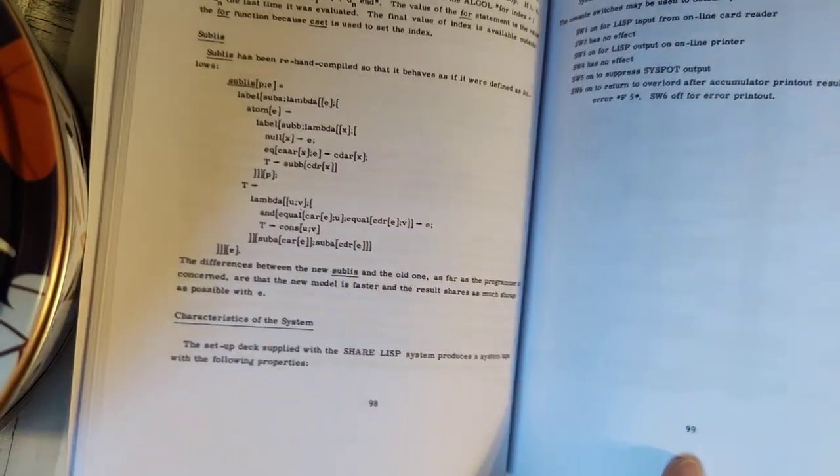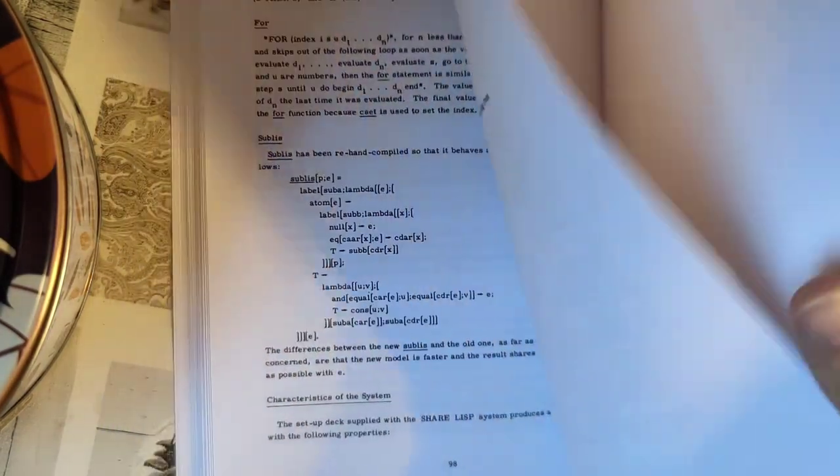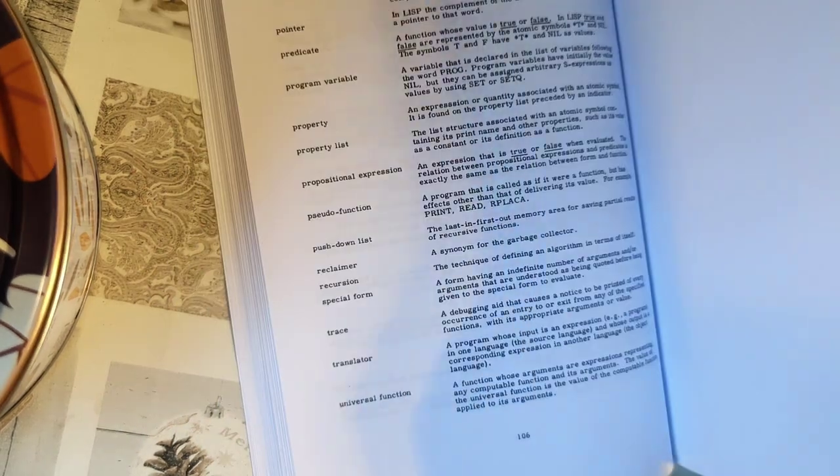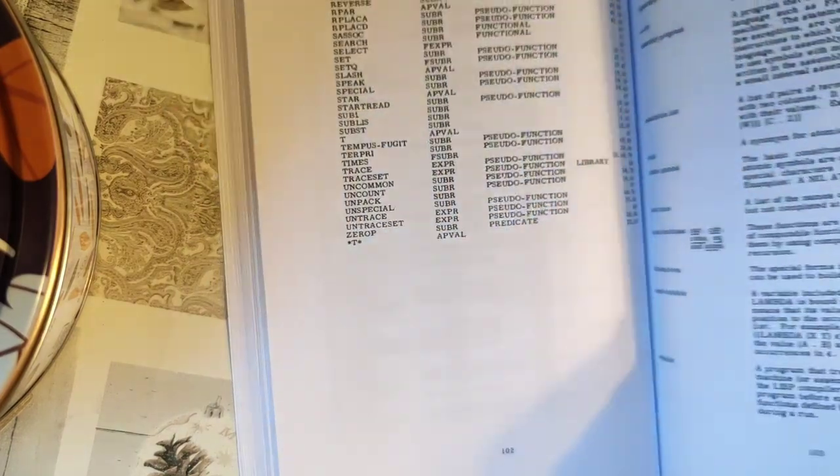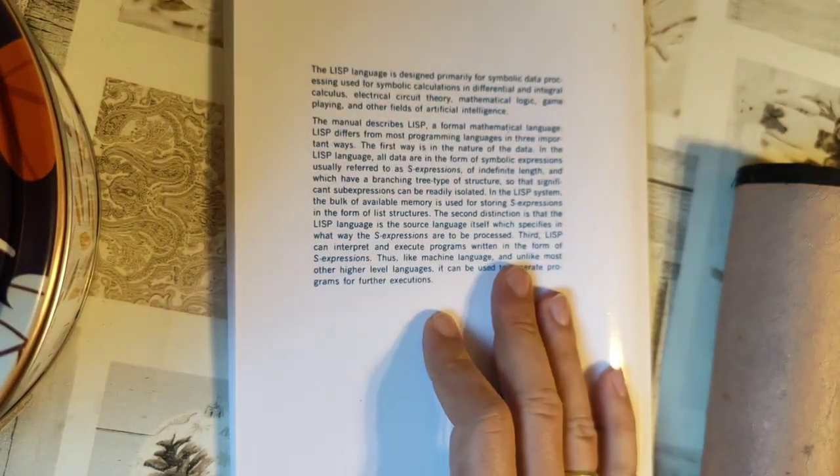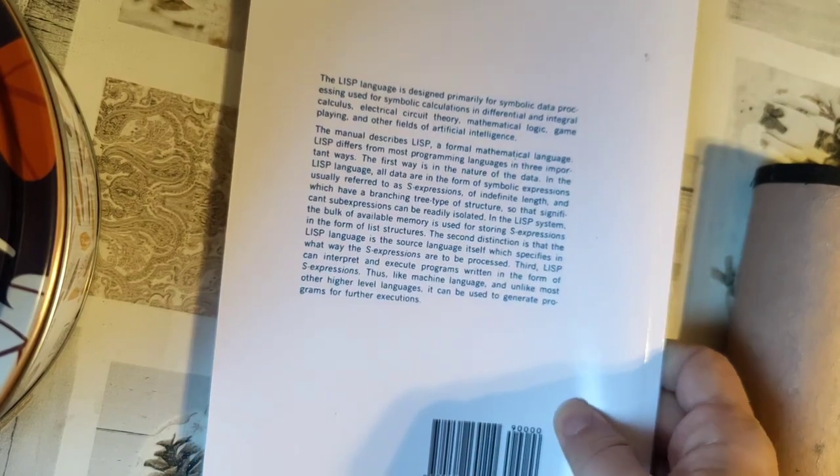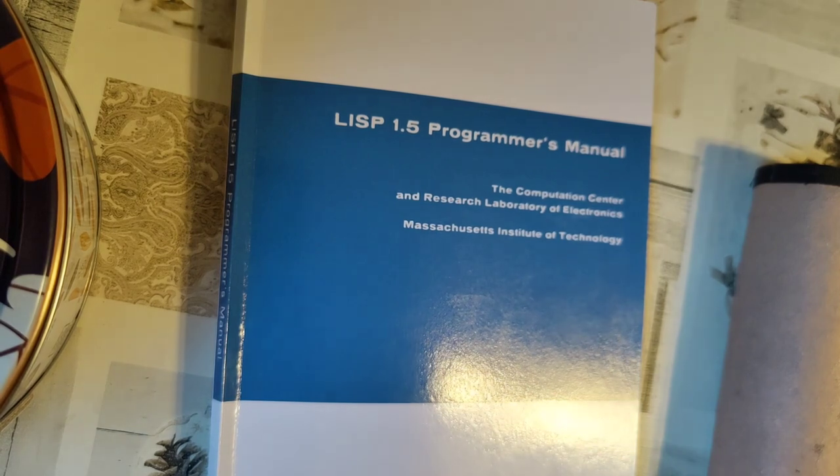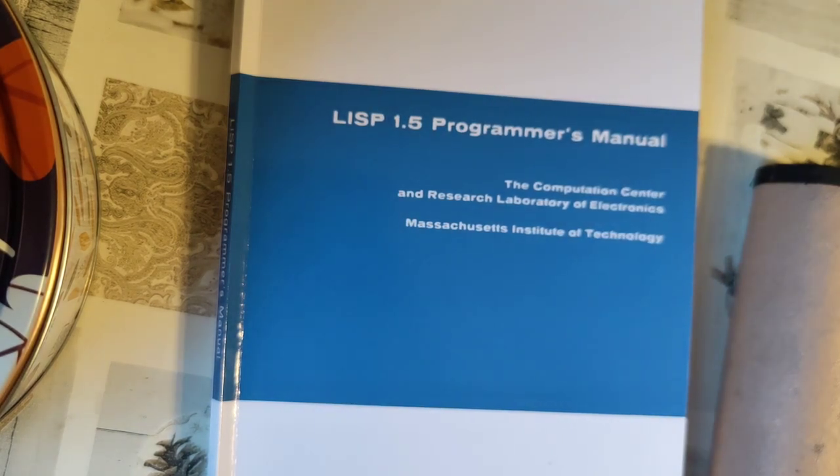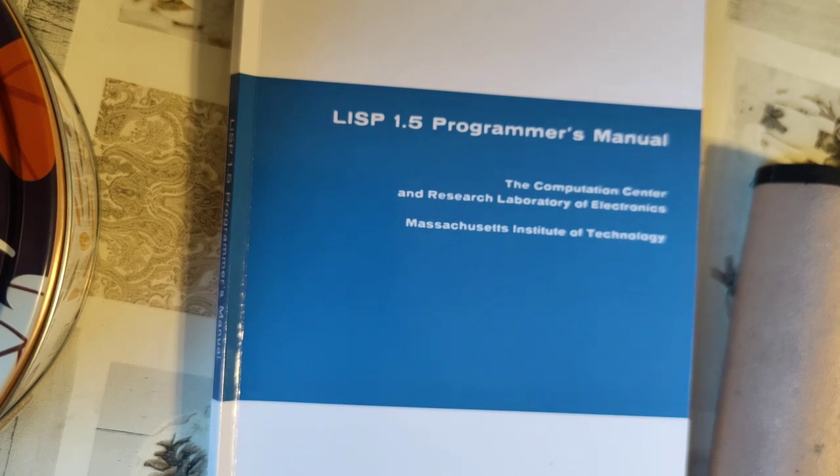And that concludes it, yeah? Page 99, just as I promised you in the beginning. I think the rest is just some, you know, dictionary and things like that, but it's nothing relevant anymore. All right. So that is LISP 1.5 Programmer's Manual. I hope you enjoyed it. More books are to be reviewed in the future. So I hope you'll become my regular guest. I hope to greet you here soon again. I wish you a wonderful day. And from me, goodbye.